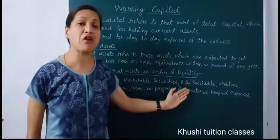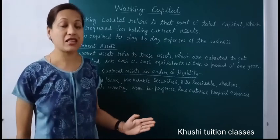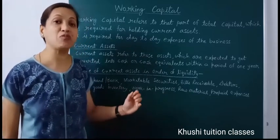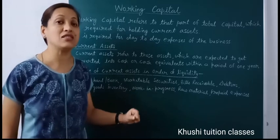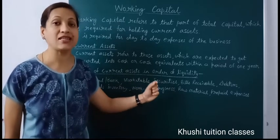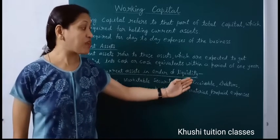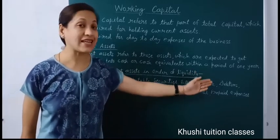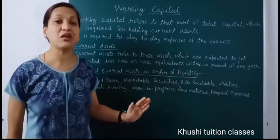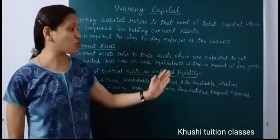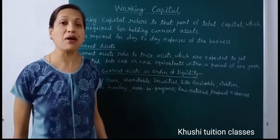Then comes bills receivable — these are debtors who have given us a signed bill of exchange. On this bill of exchange a time period is written, like 2 months or 3 months, after which our debtor will make the payment. So bills receivable come next, and after that come debtors who are unsecured — meaning they have not given us any bill of exchange to sign. So after bills receivable, the next liquid asset is debtors.